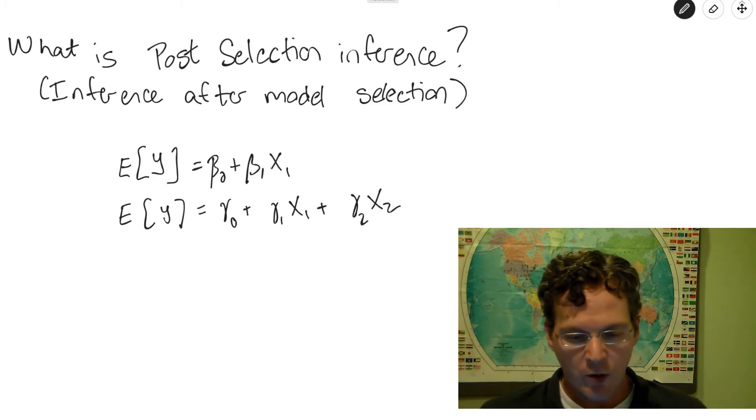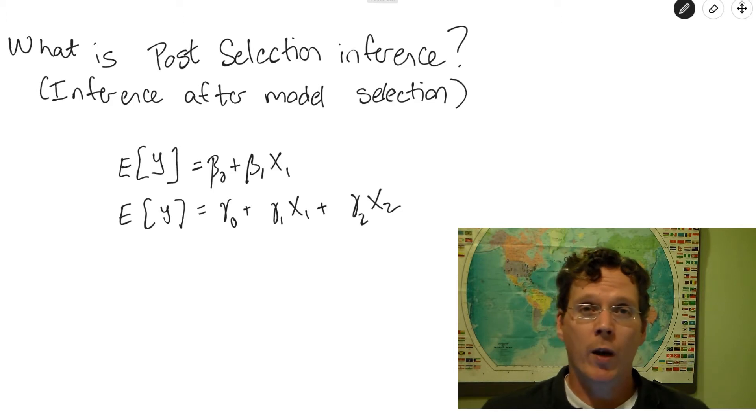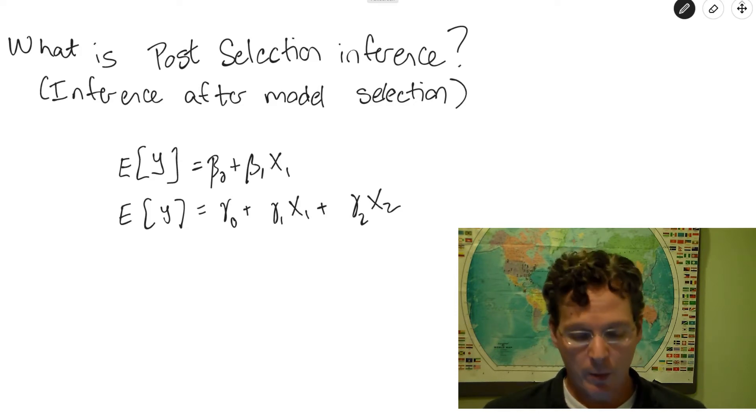Okay, so the idea behind post-model selection inference is, in many cases, you actually don't have a 5% error rate when you do that process. So let me go through it with an example.